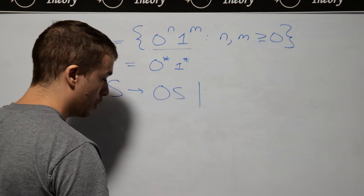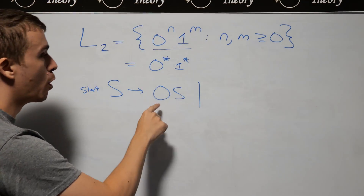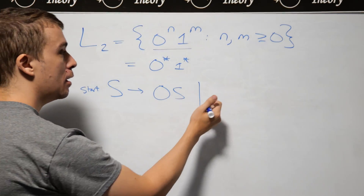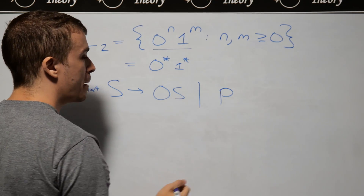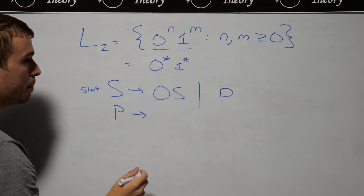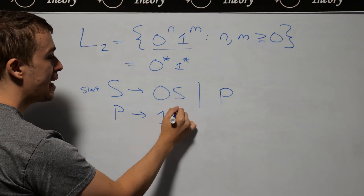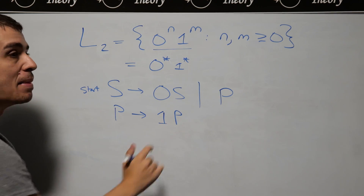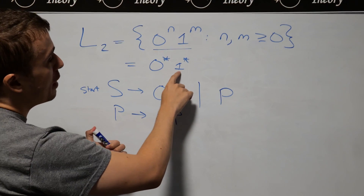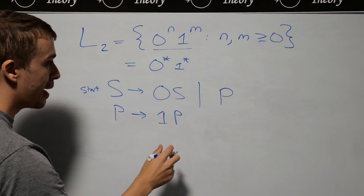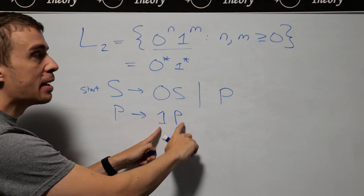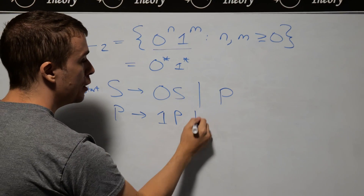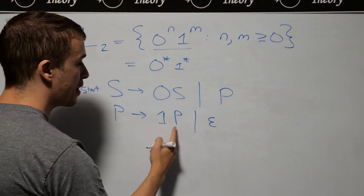What we want to do is go to some other place where we can't access the zero rule anymore, and then generate the ones there. So I'm going to introduce a variable called P — a completely new variable where I can now make the ones. Just like the S variable makes zeros, P makes ones, with no relationship other than the ones being after the zeros. Once I'm done generating the ones, there's nothing after them, and I need to be able to stop by making the variable go away.